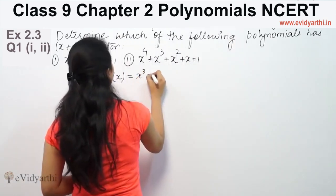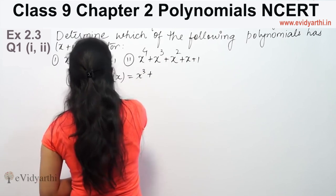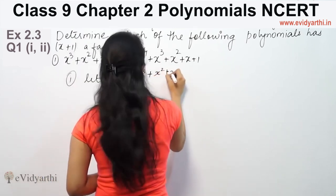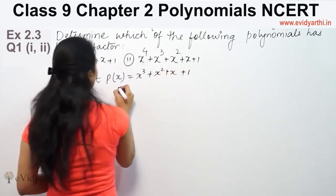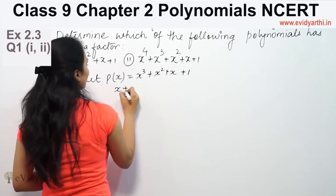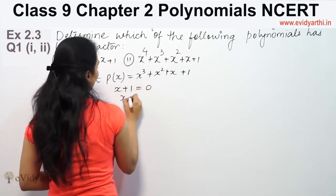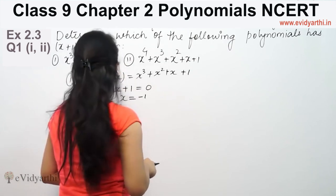We have the first polynomial: x cubed plus x squared plus x plus 1. To check if x plus 1 is a factor, we set x plus 1 equal to 0, which gives x equal to minus 1.